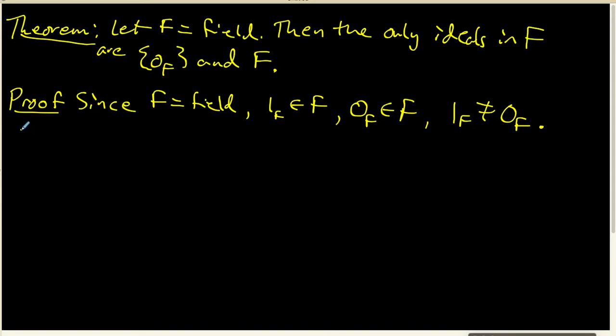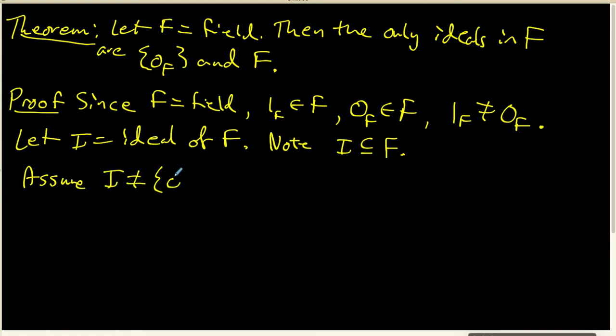The next thing that I want to do is I want to simply let I be any ideal of my field F. And I do want to make a note that because I is an ideal, I is clearly a subset of F. Now, I'm going to assume that I is not the 0 ideal. That's going to imply that there exists something inside my ideal with that element not being equal to the 0 ideal.